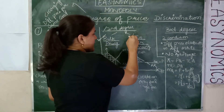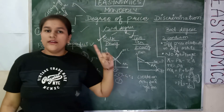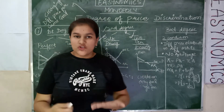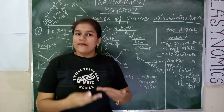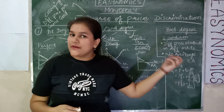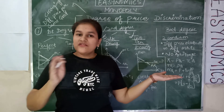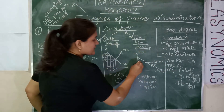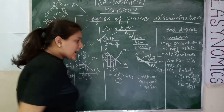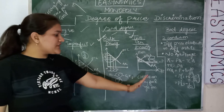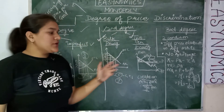Now let's come to two-tier pricing. In two-tier pricing, there are two types of fees: an entry fee and a usage fee. Whatever the consumer surplus is, you charge it as the entry fee. For example, if you go to an amusement park, you pay an entry fee of 200 or 300 rupees, and once inside, you pay a separate price for each ride. So in two-tier pricing, the entire consumer surplus is charged as the entry fee, and after that, charges are based on usage of the commodity.